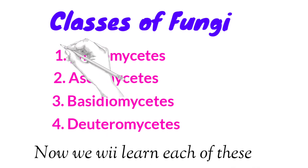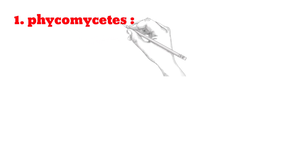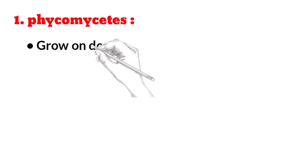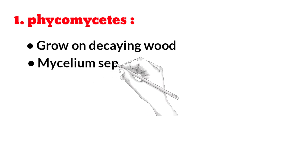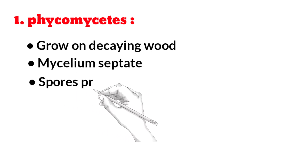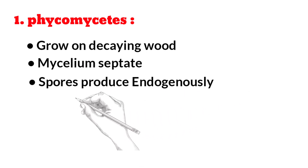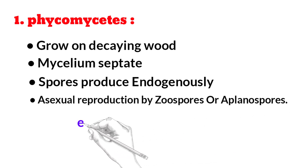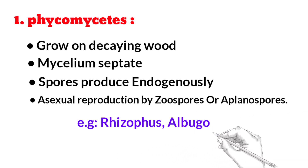1. Phycomycetes — they grow on decaying wood. Mycelium is aseptate. Spores are produced exogenously. Asexual spores are formed by zoospores or aplanospores. Example: Rhizopus.